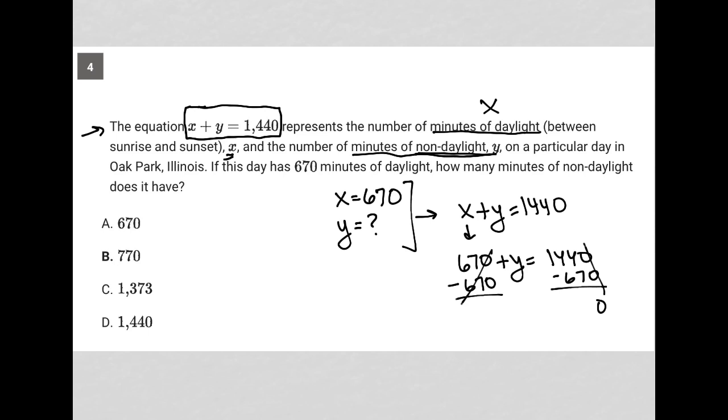Zero minus zero, zero. Let's borrow... and that would be 7. So 770 is our answer.